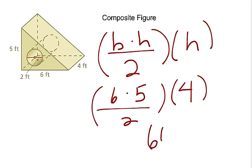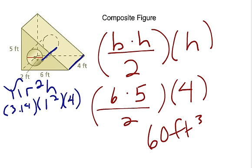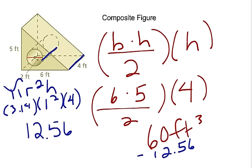Now we find the volume of the cylinder using pi r squared h, so 3.14 times the radius squared times the height. They gave us a diameter of 2, so the radius is 2 divided by 2, which is 1. 1 squared is 1, and the height of the cylinder is 4 — the same as the prism height. So 3.14 times 1 times 4 equals 12.56. We subtract: 60 minus 12.56 gives the volume of this composite figure.